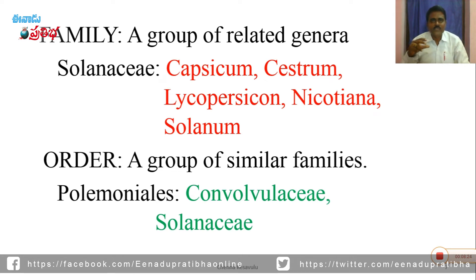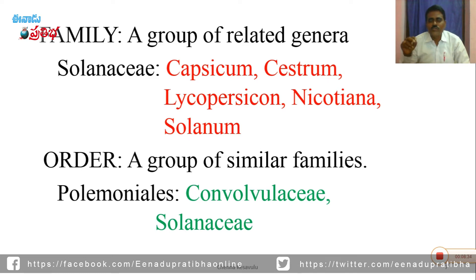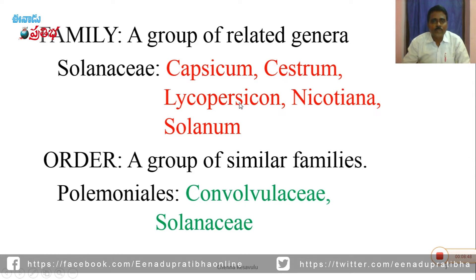A group of related genera is called a family. For example, Solanum, Capsicum, Cestrum nocturnum, Lycopersicon, and Nicotiana — all these genera having similar characters are grouped under the family Solanaceae.